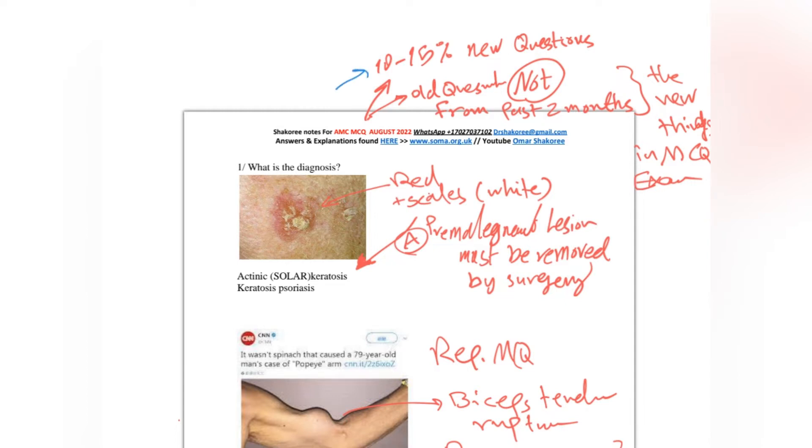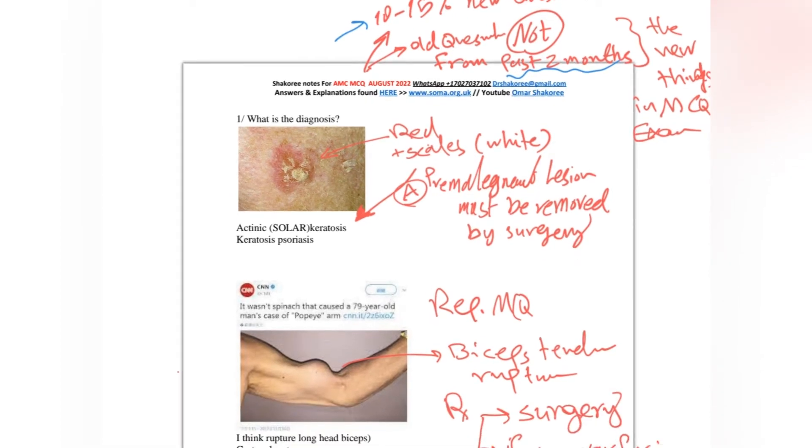Most of the old questions are not from the past two months, not from July, not from June. This is a new thing that happened this month for AMC MCQ exam. But still, the main advice to you is to read the last four to six months of recall and save them in your mind. So let's start with the August 2022.